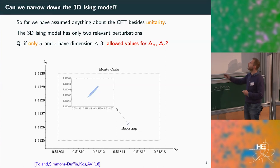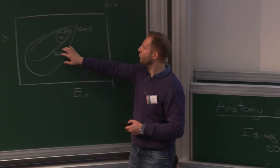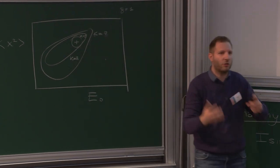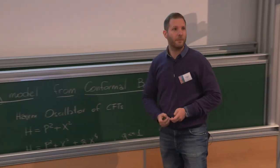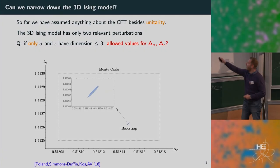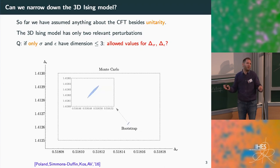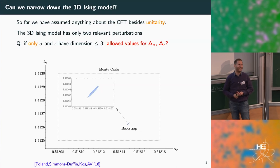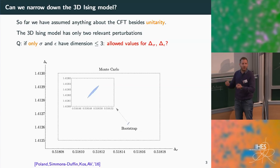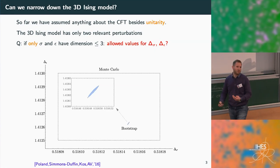This bootstrap prediction is quite astonishing in its precision. These bounds are rigorous in the sense that there is no simulation involved — it is a rigorous bound. Outside the blue region, one can provide the explicit linear functional giving the contradiction, up to any desired machine precision. The Monte Carlo result is a confidence region, while the bootstrap bound is a rigorous mathematical statement.